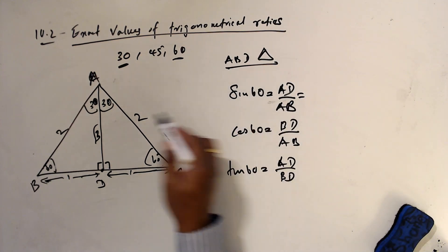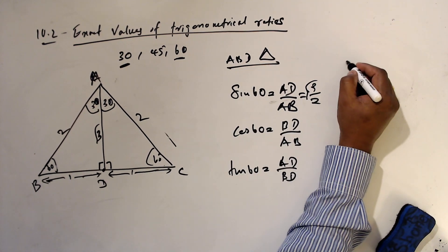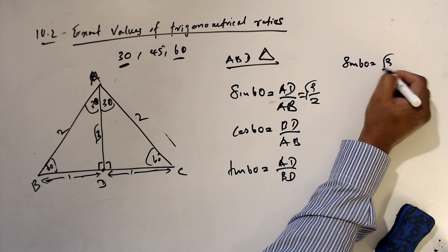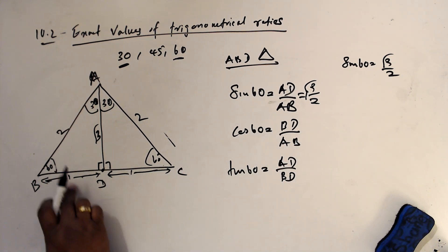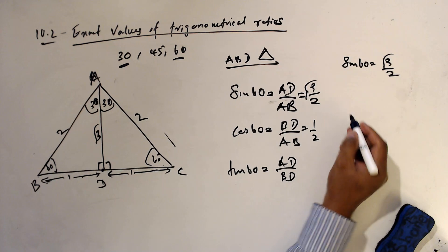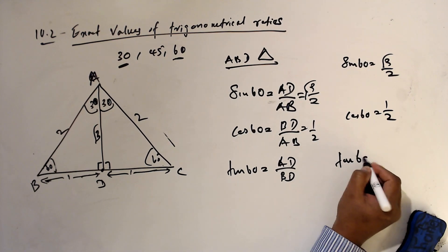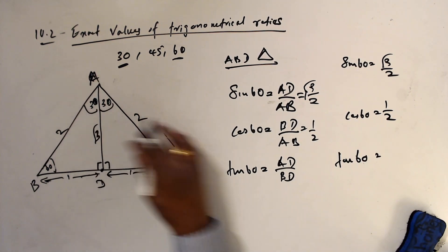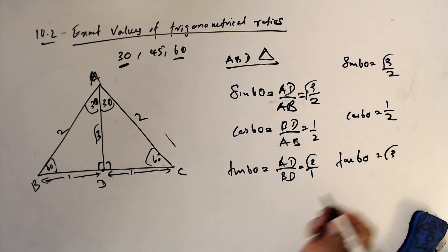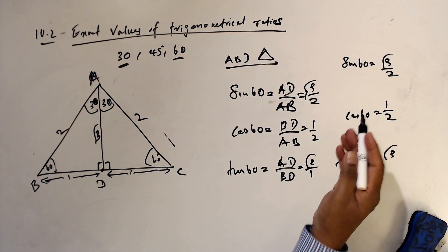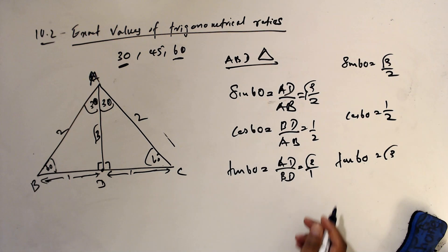So sin 60° = AD/AB = √3/2. Cos 60° = BD/AB = 1/2. Tan 60° = AD/BD = √3/1 = √3. These numbers should be remembered for quick calculation in the exam.